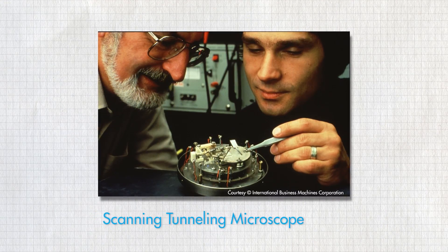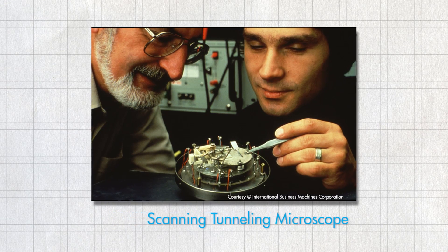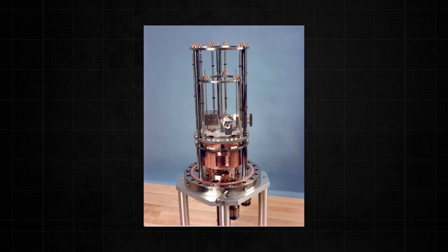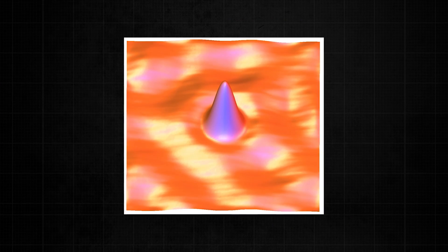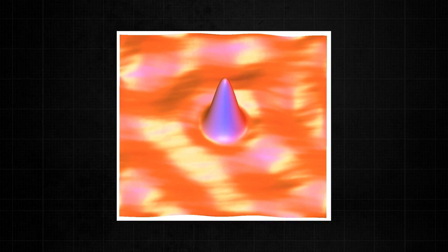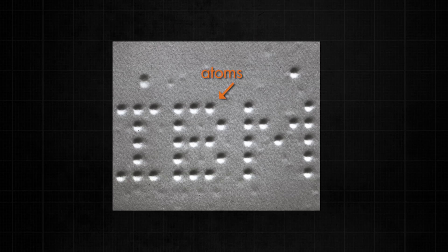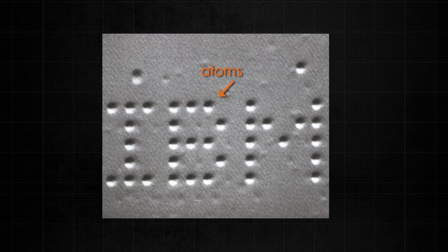The scanning tunneling microscope was invented in 1981 by a Swiss and a German physicist. They won a Nobel Prize, and the microscope launched the age of nanotechnology. It allows humans to see smaller than ever before, so small that we can see individual atoms and even move them to create advanced nanostructures. Scientists have even spelled out letters using atoms to demonstrate this capability.